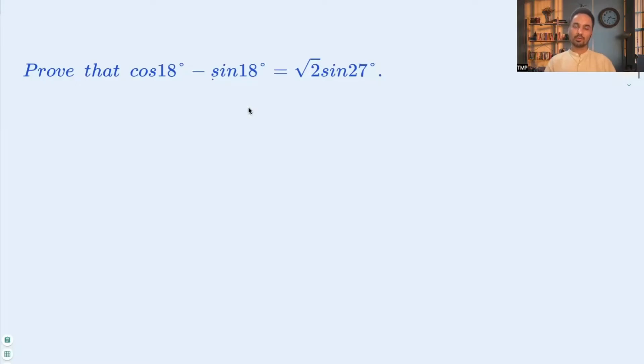Hi everyone, here we are solving a question based on compound angles. The question is prove that cos 18 degrees minus sin 18 degrees is equal to square root 2 times sin 27 degrees.